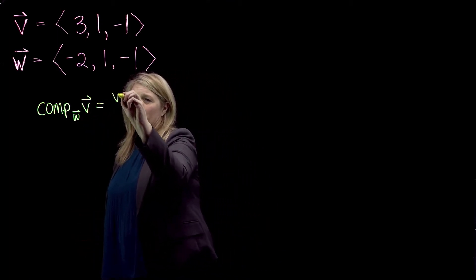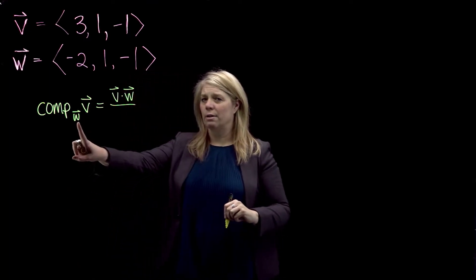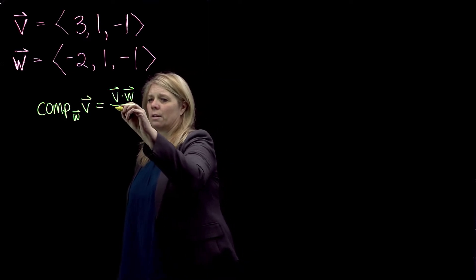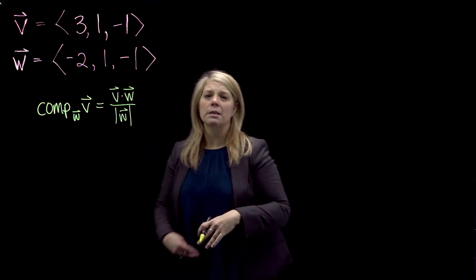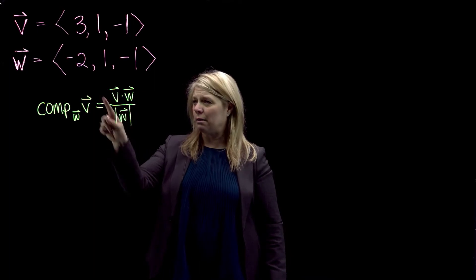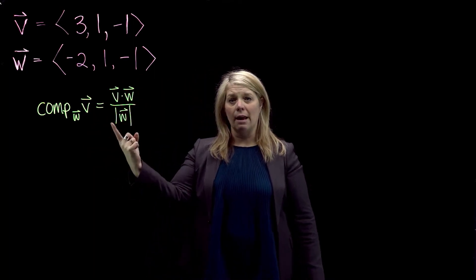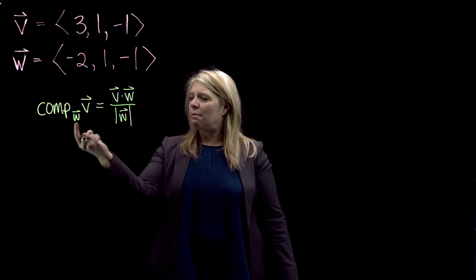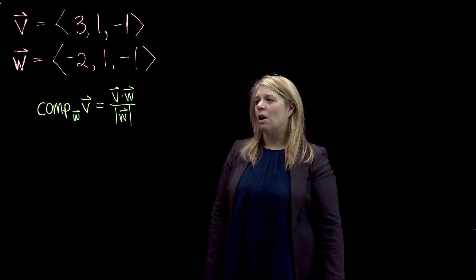The formula is the dot product of the two vectors divided by the magnitude of the vector you're projecting onto. That's not a hard formula to memorize. The key thing is knowing dot product, and remembering it's a scalar will help. Also keep in mind the magnitude of the vector that you're projecting onto.